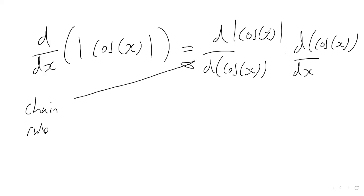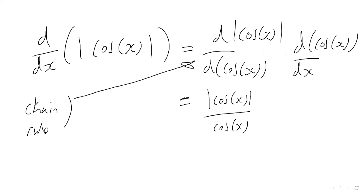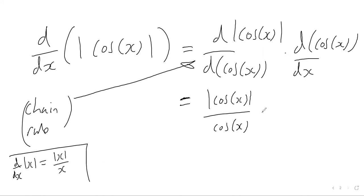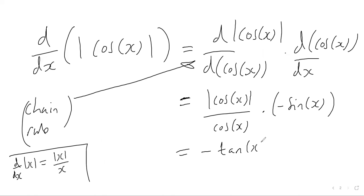We want to differentiate the modulus of cos of x with respect to cos of x. We know that when we differentiate the modulus of x with respect to x, we get the modulus of x over x — a result from a previous video. So differentiating gives us the modulus of cos x over cos x. Then differentiating the cosine function gives us negative sine of x. Simplifying: sine x over cos x is tan x, so we get negative tan x multiplied by the modulus of cos x.